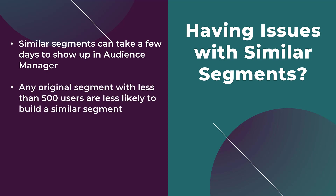Any original data segment with less than 500 users is very unlikely to have a similar segment built. Try to make sure your root audiences are as large as possible — not only do we want to make sure a similar audience can even be built, but the more users within your original data segment, the more signals Google has to hopefully build a better, more accurate similar segment.